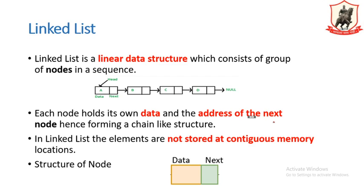A linked list is the most commonly used linear data structure which consists of a group of nodes. In a linear data structure, data elements are arranged in a sequential manner. Each node consists of two fields: a data field and an address field. The data field contains the information — it can be integer, float, character, or of any type.